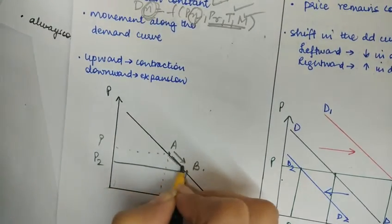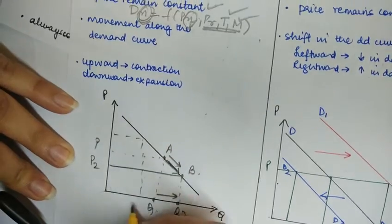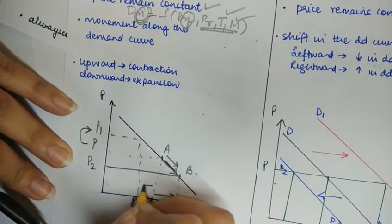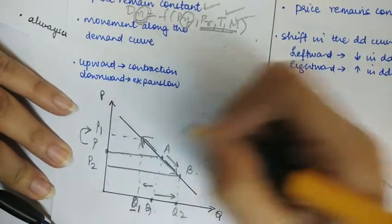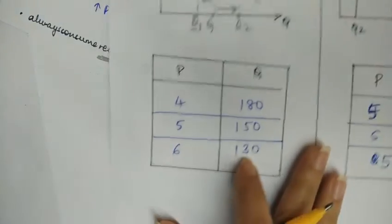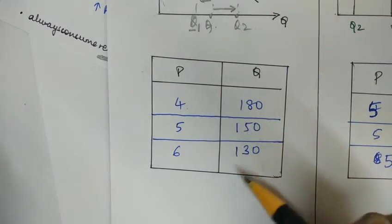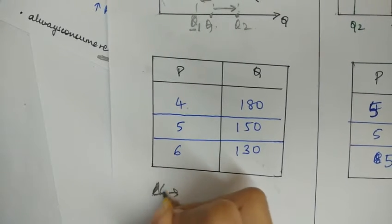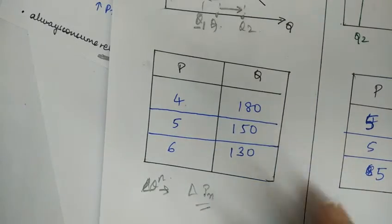A downward movement along the demand curve is called the expansion of demand, as demand increases from Q to Q2. When the price increases from P to P1, the demand falls from Q to Q1, which is an upward movement on the demand curve called the contraction of demand. The key point is that change in quantity demanded is due to a change in the price of that particular good, with other factors remaining constant.